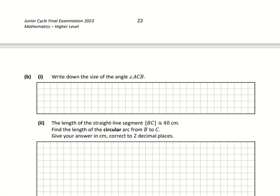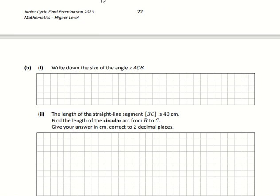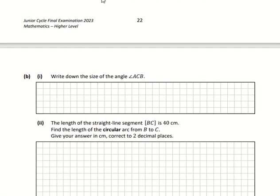So I'll write down the size of the angle ACB. Well, it states up above that it's an equilateral triangle, therefore the angle has to be 60 degrees. So we just have to write down 60 there.